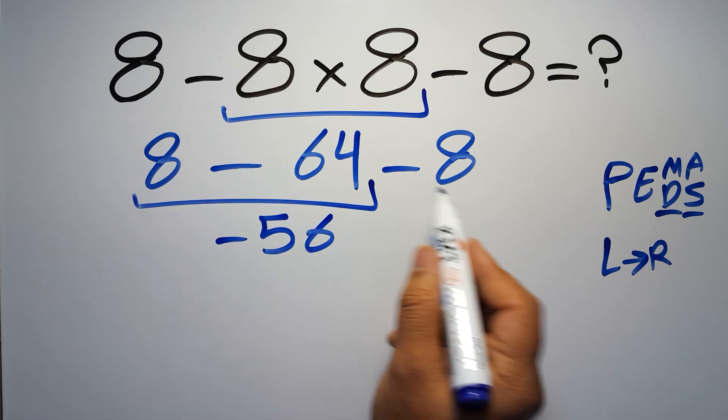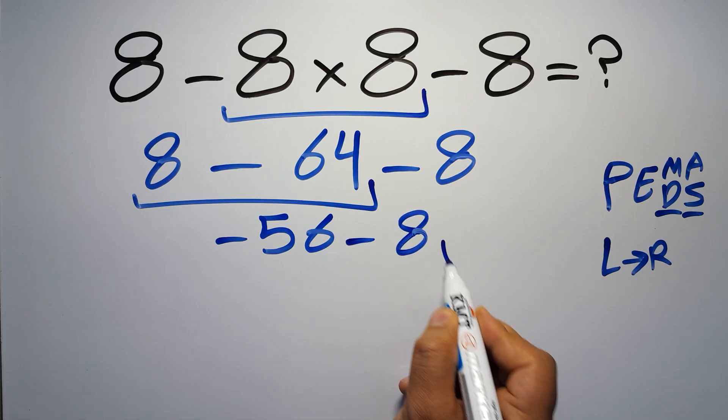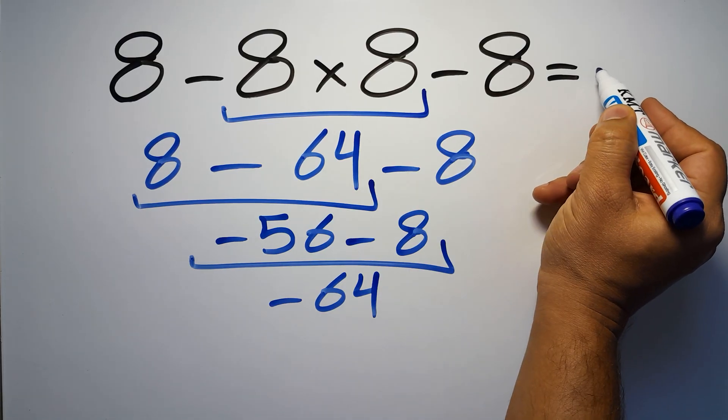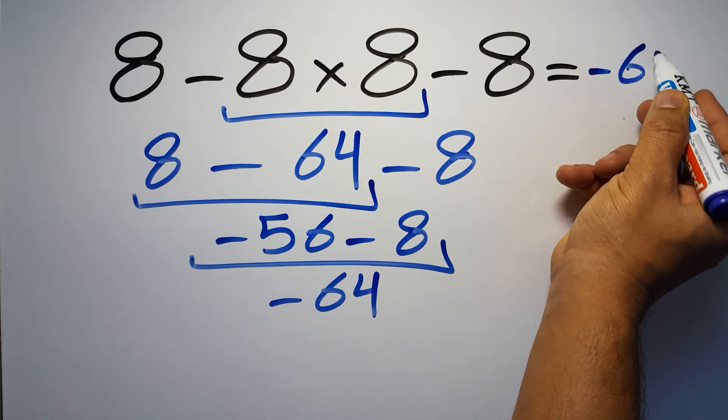So negative 56 minus eight equals negative 64. And this is our final answer to this problem. The correct answer is negative 64.